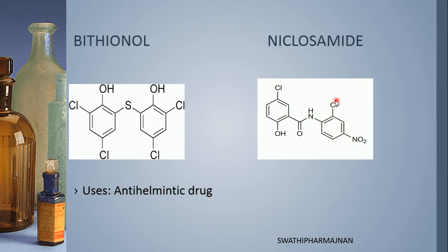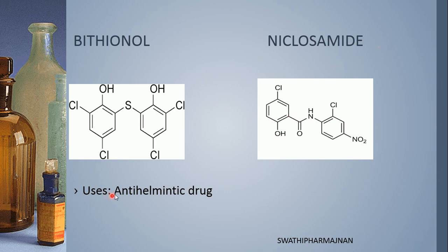In niclosamide, an amide group is present as a bridge between parachlorophenol and metachloronitrobenzene. The nitro group acts as a functional group on nitrobenzene, and at the meta position a chloro group is present. Between parachlorophenol and metachloronitrobenzene the amide group is present — that is the structure of niclosamide. Both bithionol and niclosamide are used as anti-helminthic drugs.